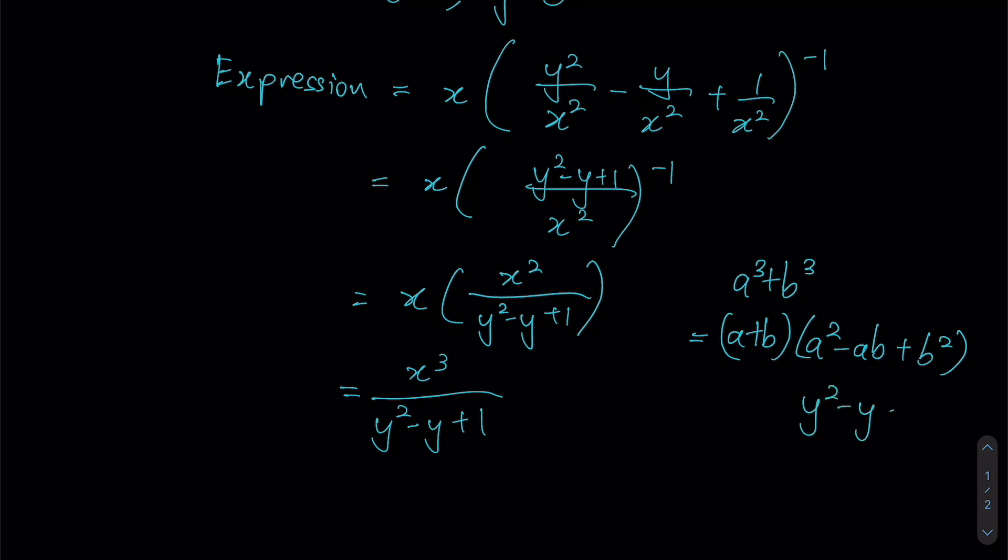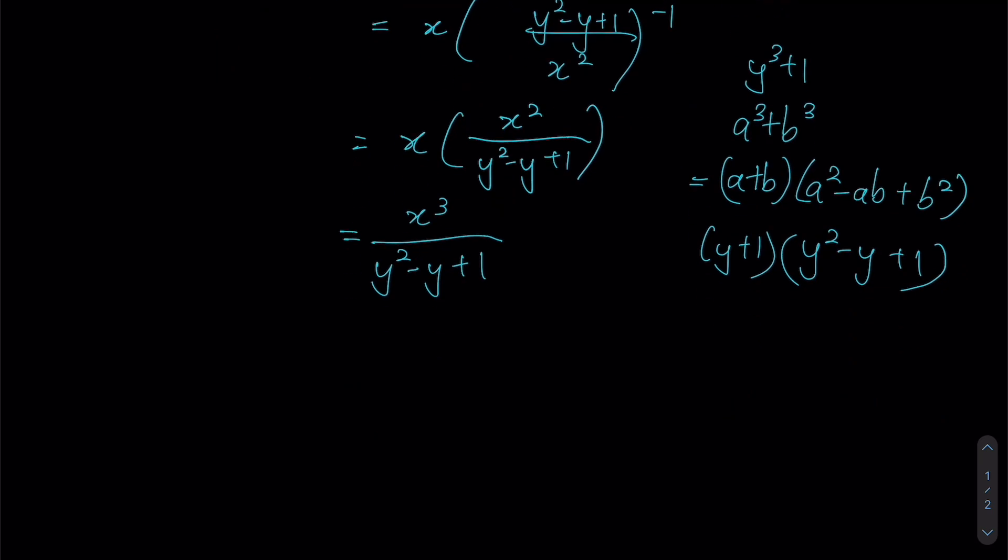And notice that your denominator here looks really similar to the form as stated over here. So if this is of the form y squared minus y plus 1, all that is missing is effectively a y plus 1, such that instead of a cubed plus b cubed, we will obtain y cubed plus 1. So this is what we're going to try and achieve in this fraction.